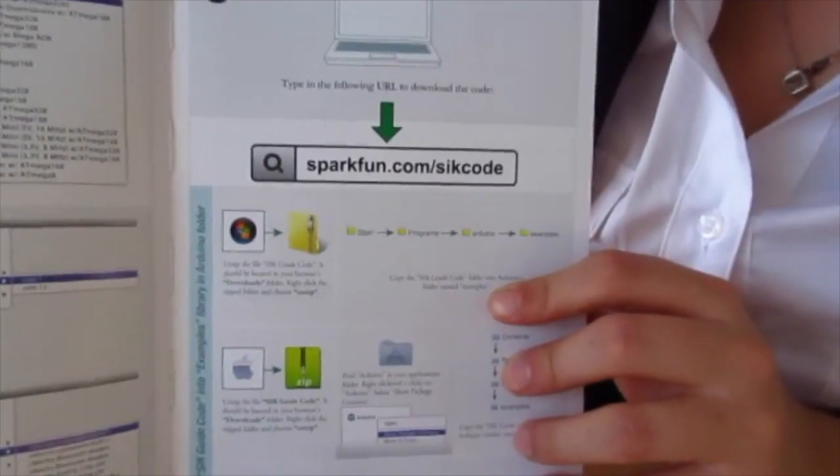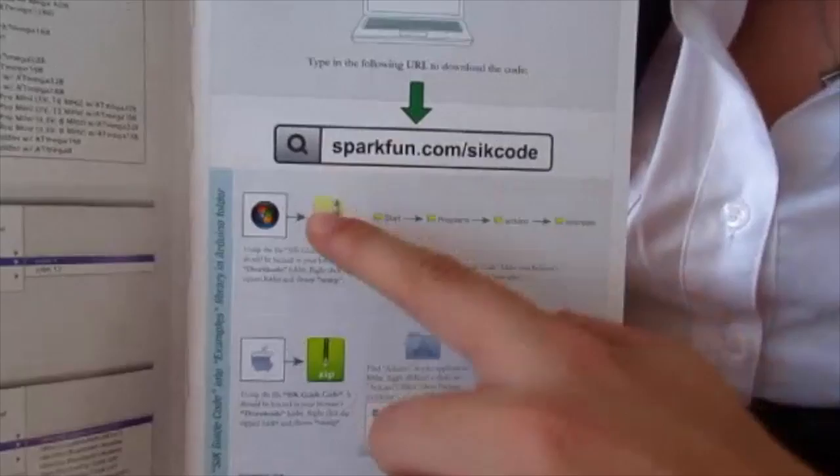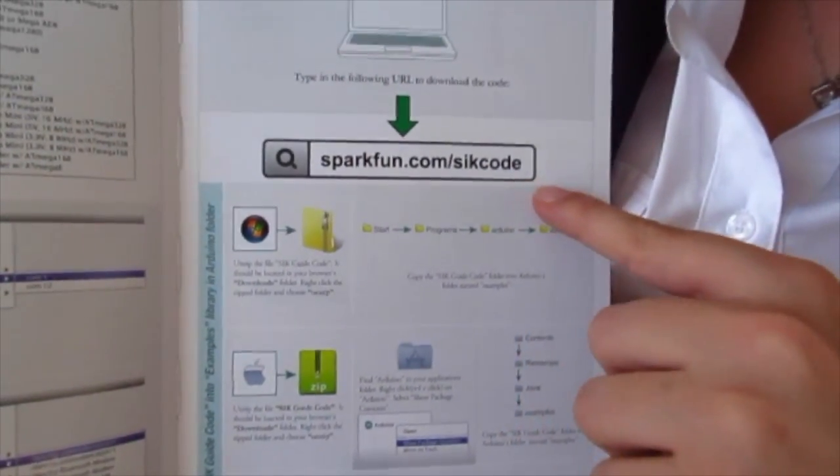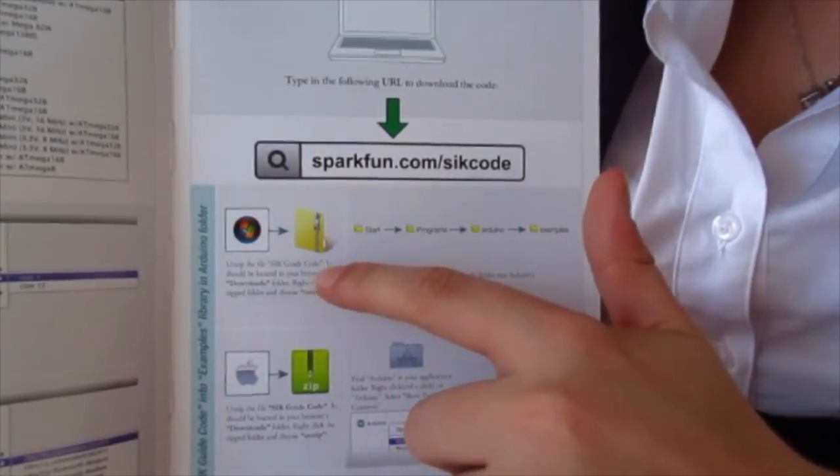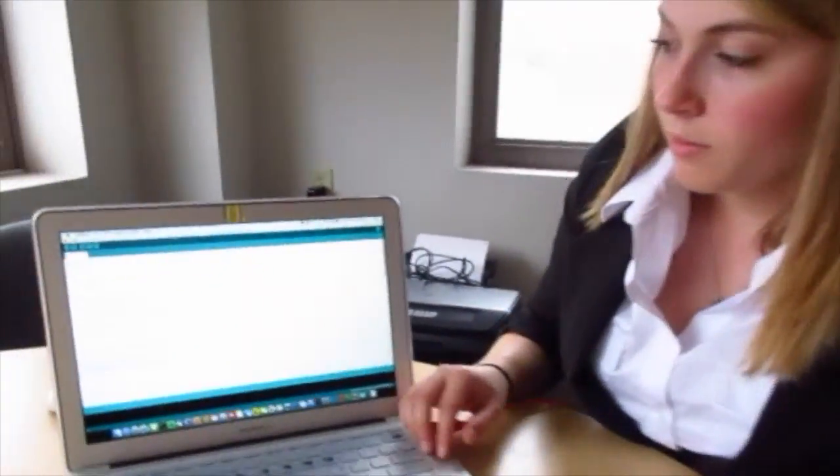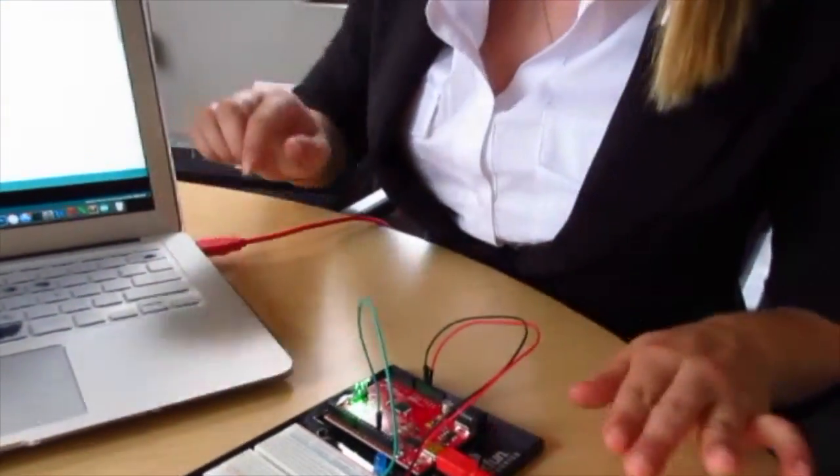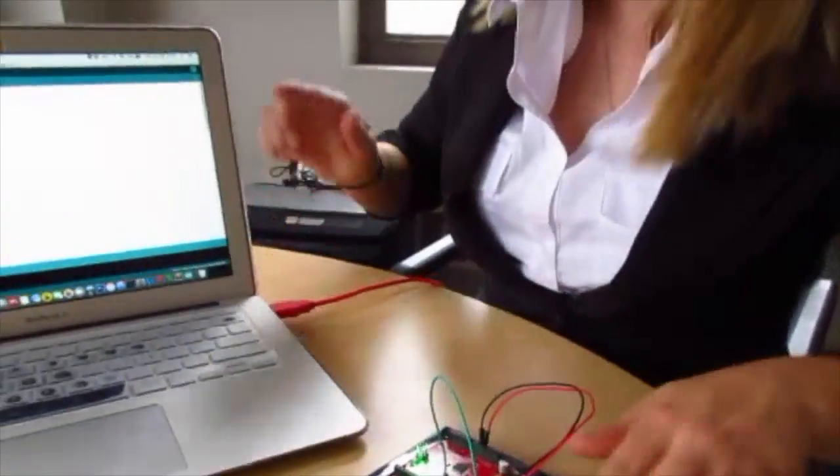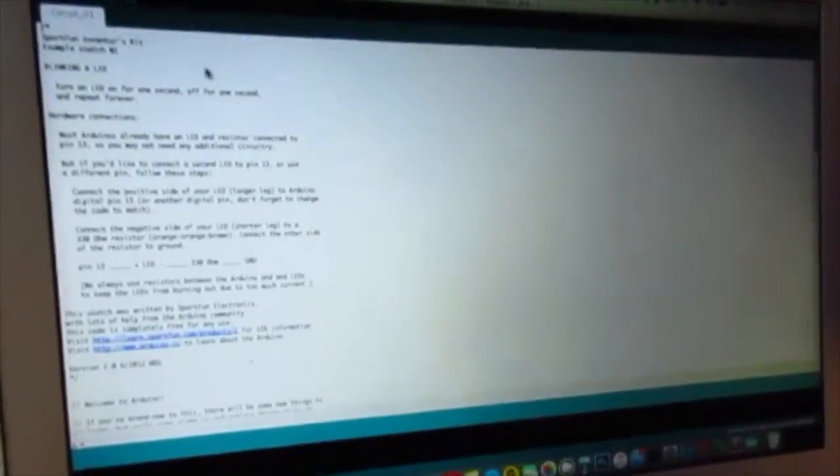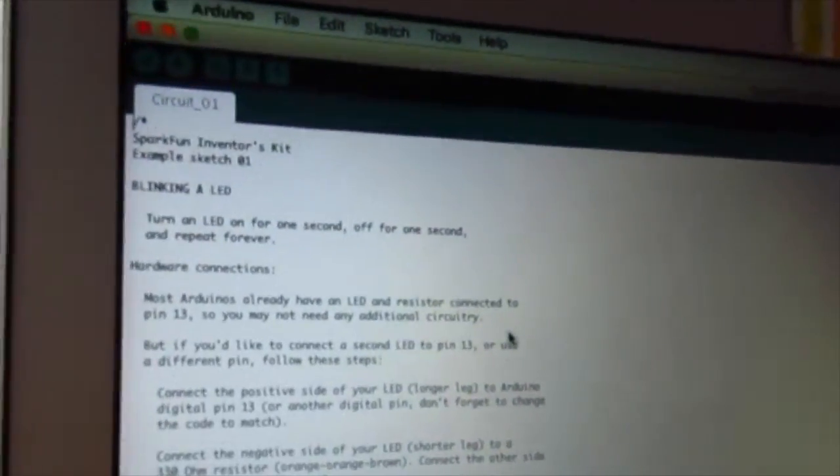To download the code for the examples, you're going to go to sparkfun.com/SIKcode and download the zip file onto your computer. Next, you're going to connect your Arduino to your computer using your USB cable. Make sure that all of your stuff is connected properly before you do this step.